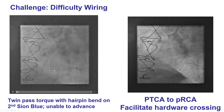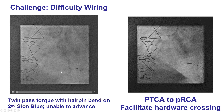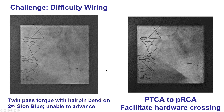When this problem happens, one option is to use a microcatheter; another is to use a polymer-jacketed wire. Another option is to use the hairpin technique or reverse guidewire technique, in which a hairpin is formed, usually on a polymer-jacketed wire like a Fielder FC or a Sion Black. This is advanced through the dual-lumen microcatheter all the way past the origin of the target vessel, and then when the wire is pulled back, it unfolds and enters into the PDA. Unfortunately, this did not work in this particular case.